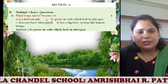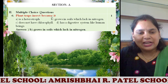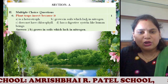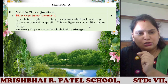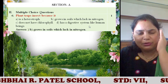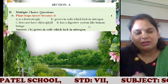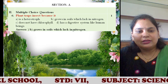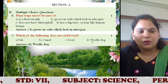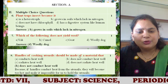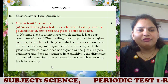Next is multiple choice questions — the second part of section A. When you read the multiple choice questions, for example: a plant traps insects because it is a heterotroph, grows in soil which lacks nitrogen, does not have chlorophyll, or has a digestive system like human beings. When you read MCQs, don't waste your time finding the options. First be clear with your answer in your mind, then go through the options. Just see if your answer is there — if it is, then select it and write the option letter and statement in your answer. With this we finish section A.